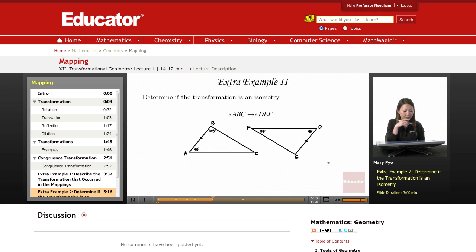The next example, determine if the transformation is an isometry. Remember an isometry is when you have two images, the pre-image and the image, are congruent. So for rotation, reflection, and translation.